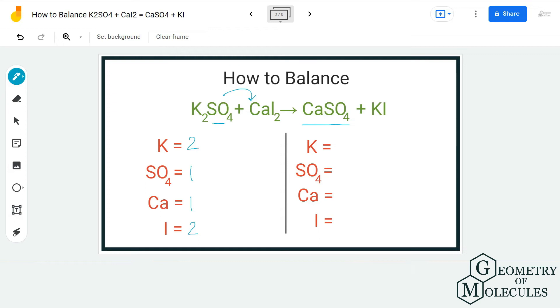I have one potassium atom on the product side, one sulfate group, one calcium atom, and one iodine atom. As you can see, we have two atoms of potassium and two atoms of iodine on the reactant side, but we do not have the same numbers on the product side for these two atoms.